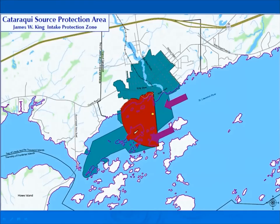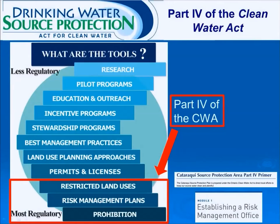Part 4 of the Clean Water Act includes three types of policies that apply only to significant drinking water threats. The types of policies are highlighted here and will be explained in more detail during this presentation. A Part 4 Primer for the Cataraqui Source Protection Area has been developed and is available on the Clean Water Cataraqui website. The image of the Cataraqui Part 4 Primer on this slide is a hyperlink to where the Primer is posted on the website.